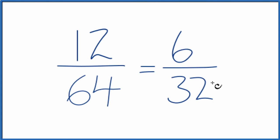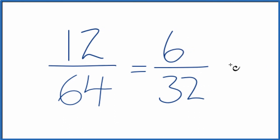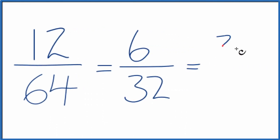So that's a little easier to work with. I can see now if I just divide this by 2 again, I'll get 3 over 16, which I can't reduce any further. So we've simplified 12/64 down to 3/16.